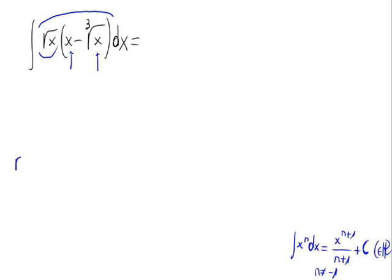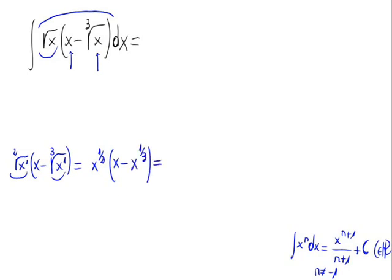So, let's express the integral so we can apply the formula. Using the distributive property, first let's express the roots with fractionary exponents. The square root of x would be x raised to 1 half, times x minus the cube root of x, multiplying the monomials.